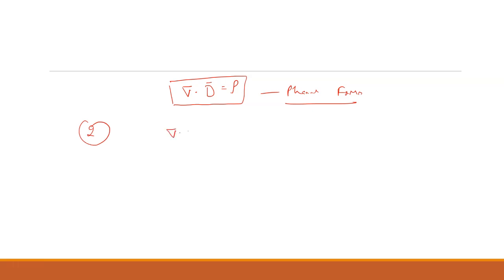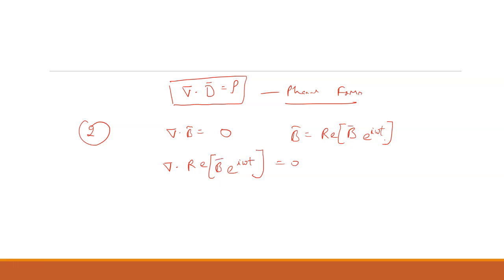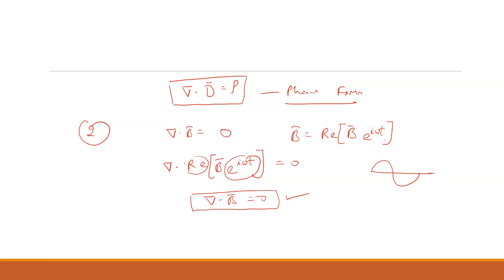The second Maxwell equation: if B equals the real part of B̃ · e^(iωt), similarly applying the same process and ignoring the time-varying parts, we retain only the position parts. So the second Maxwell equation in phasor form is ∇·B̃ = 0, dependent upon the phase (position).